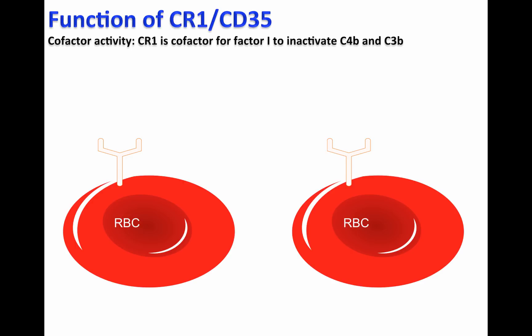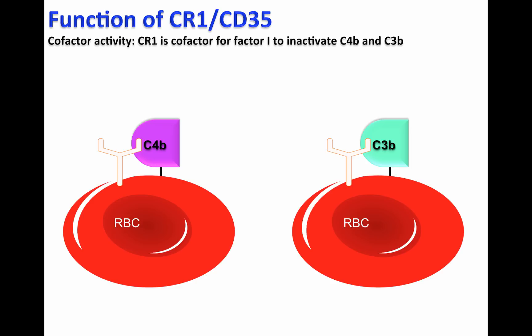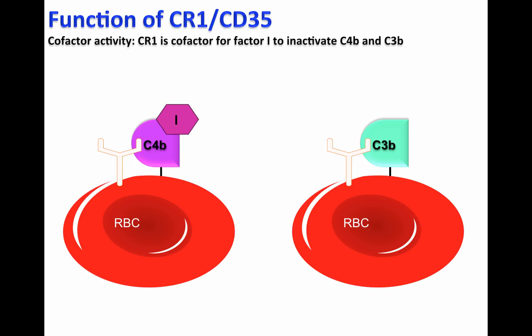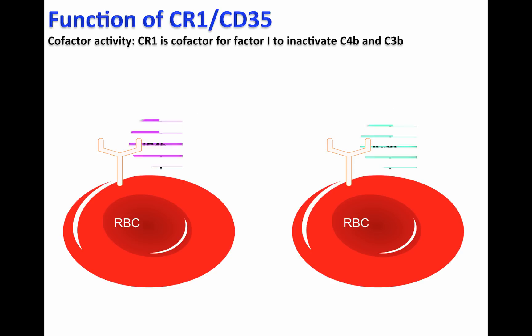In certain circumstances, the complement system can activate on the cell surface of host cells, such as red blood cells, represented by C4b and C3b deposition. CR1 is a cofactor for Factor I, which means that CR1 allows Factor I to proceed and bind to C4b and C3b to perform its function. Factor I is a protease that will cleave C4b and C3b, generating iC4b or iC3b.